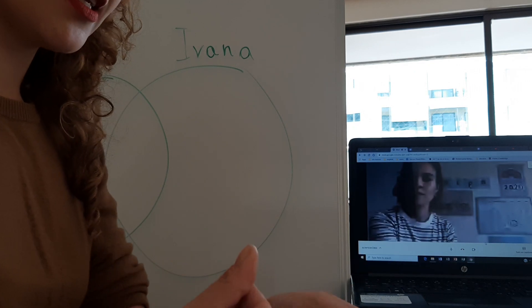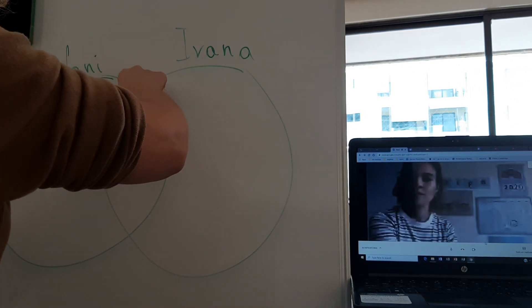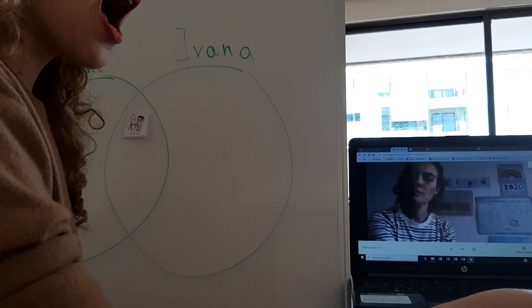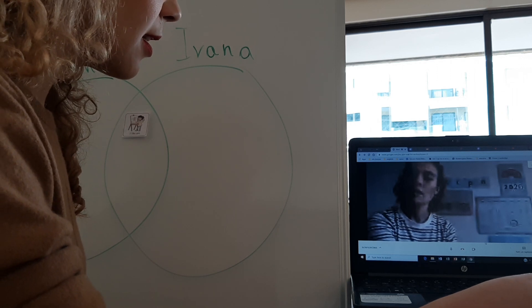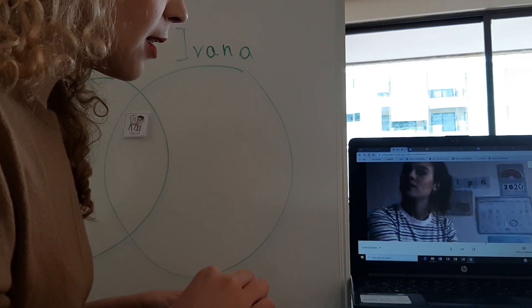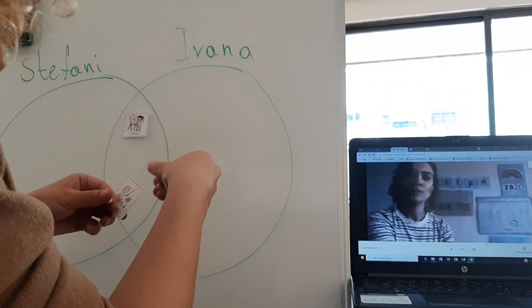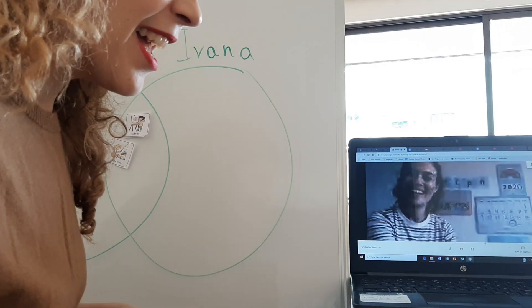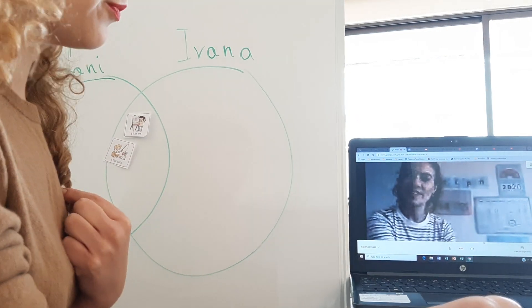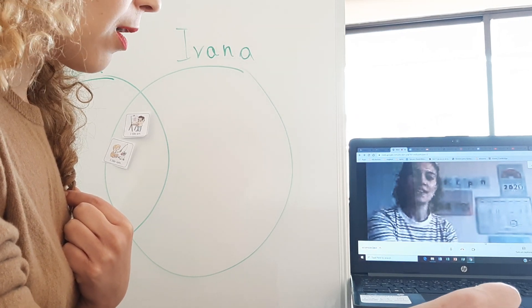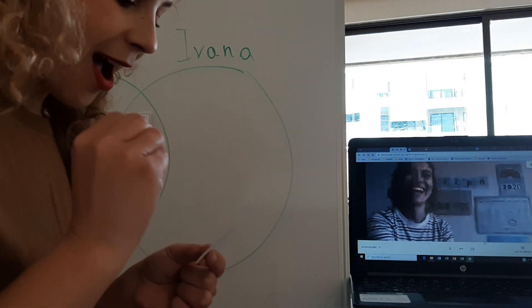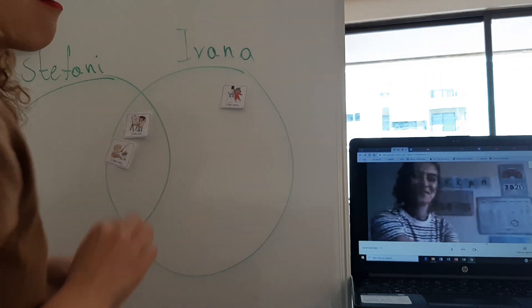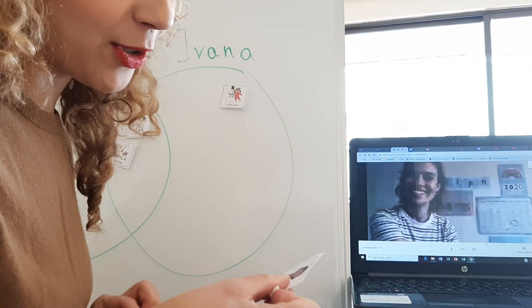Okay, so Miss Stephanie, the first thing was 'I like art' — I'm putting it here in the middle. Next statement: 'I like cats' — do you like cats? I like cats! Okay, I think we're going to have a lot of similarities here — I like cats too. Okay, Miss Stephanie, do you like snow? No, I don't really like it. I love snow! I was born in December, in winter — I love snow. Since it's super cold, I don't like it.